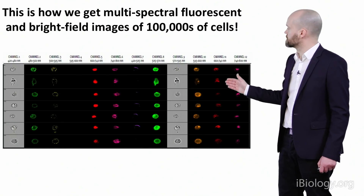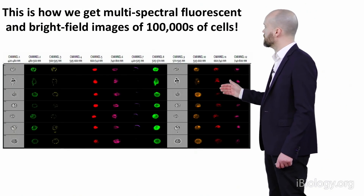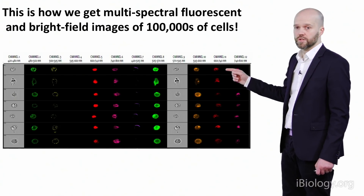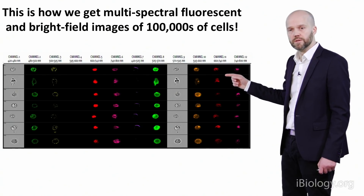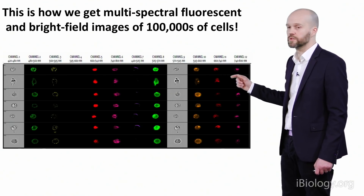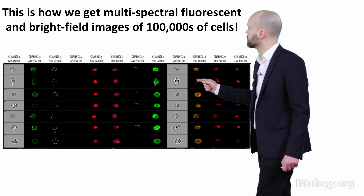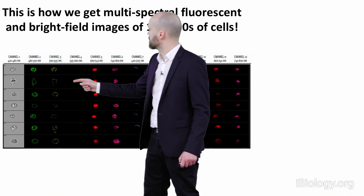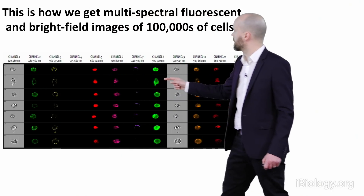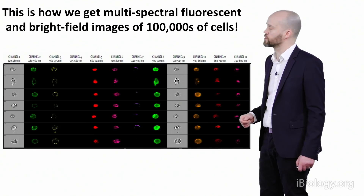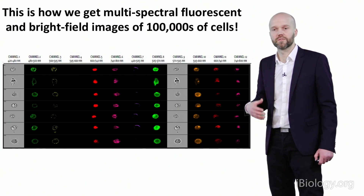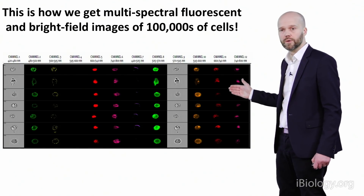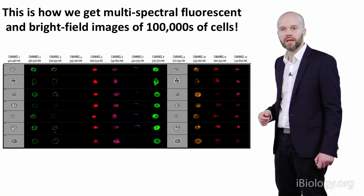This is an example of the data output. Every single row is an individual cell, and every column is an imaging feature or channel from the multispectral data — transmitted light images, targeted fluorescence, and scatter images — across hundreds of thousands, if not millions, of cells. We have the same scalability and throughput of conventional flow cytometry, but with the added benefit of knowing exactly where those signals are in or on the cell.